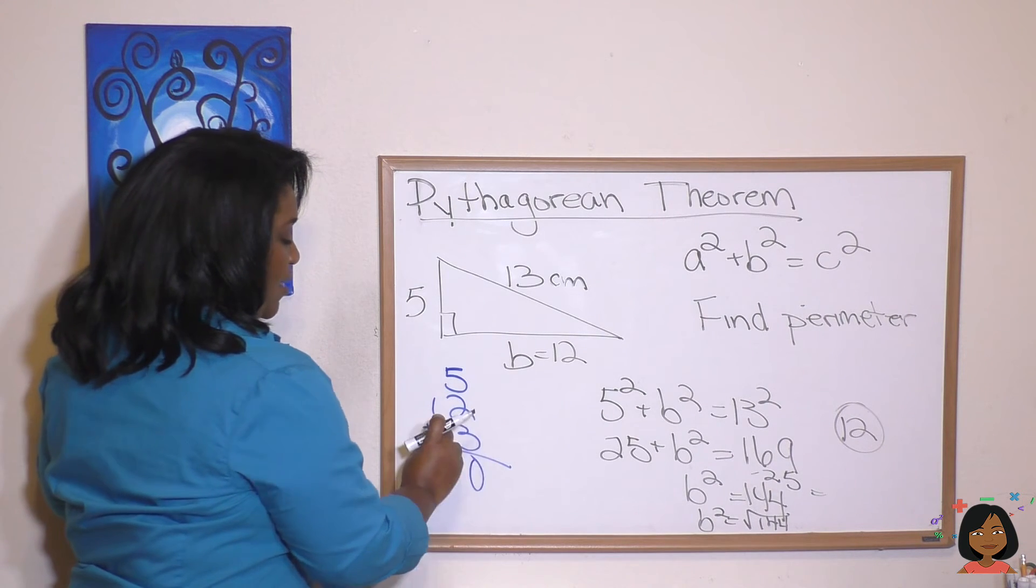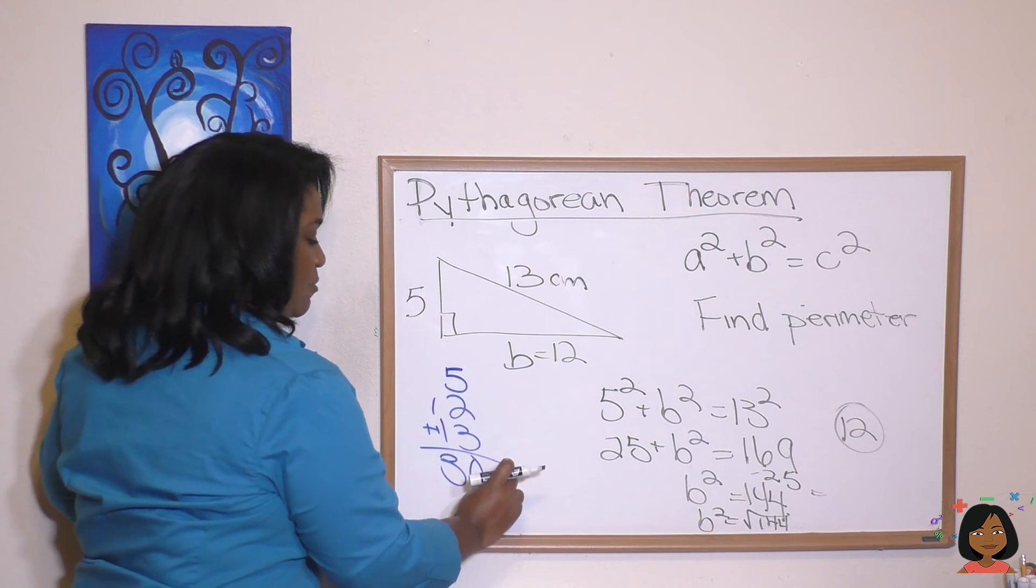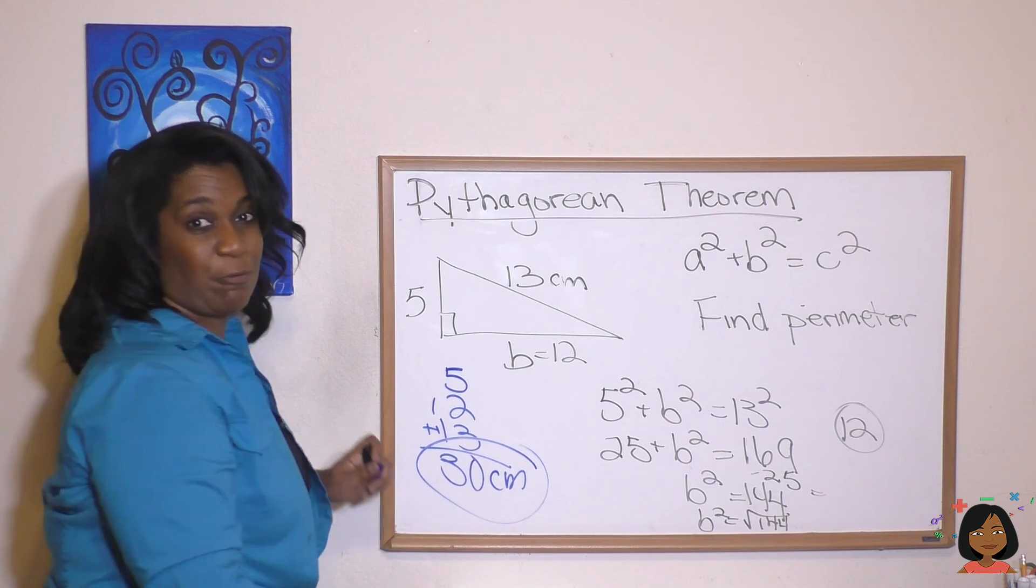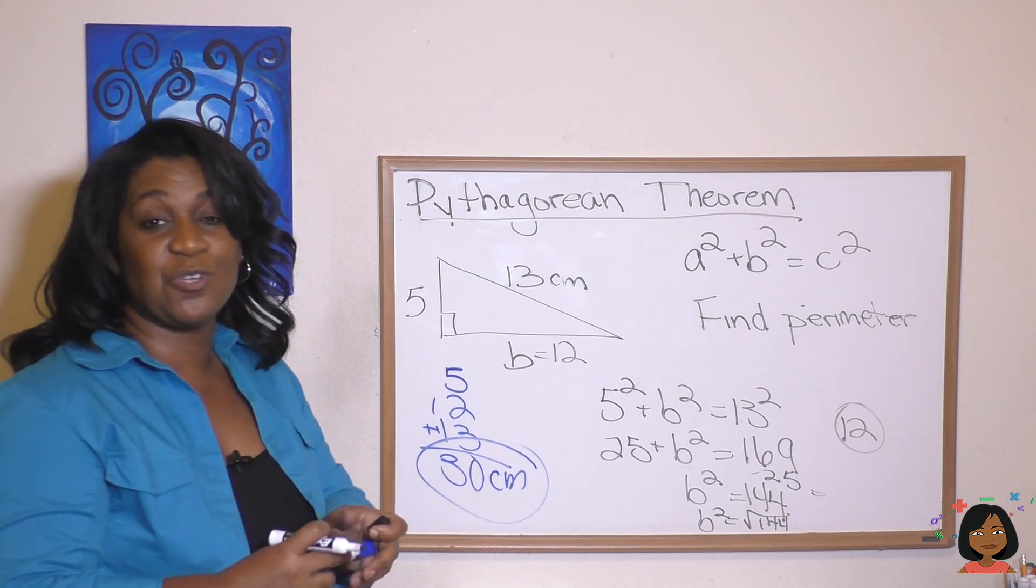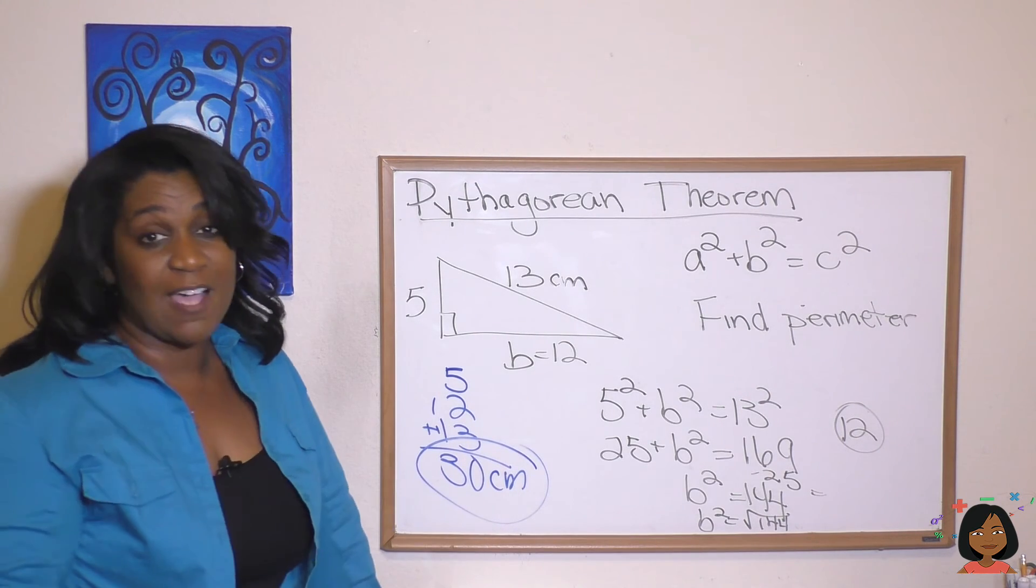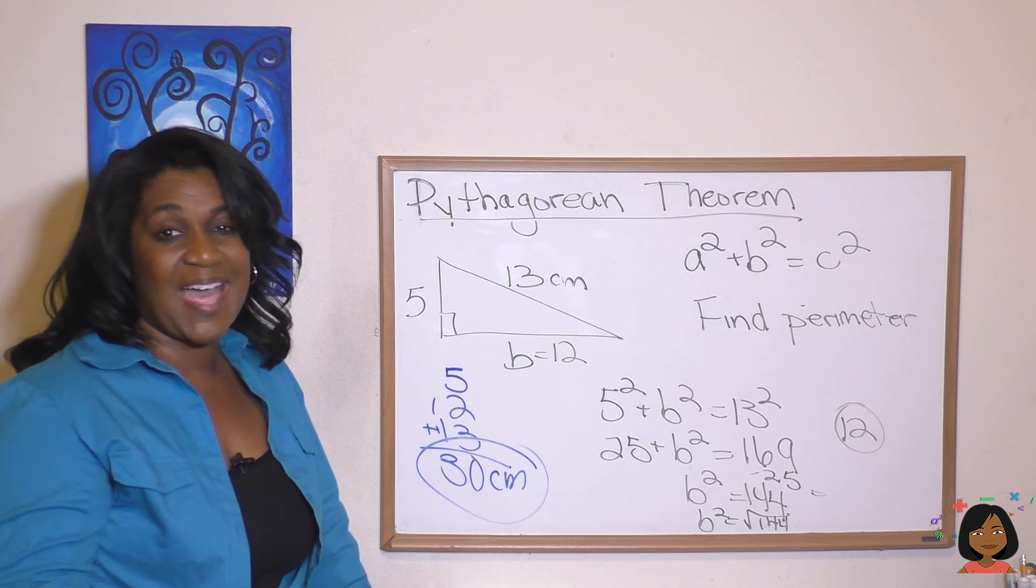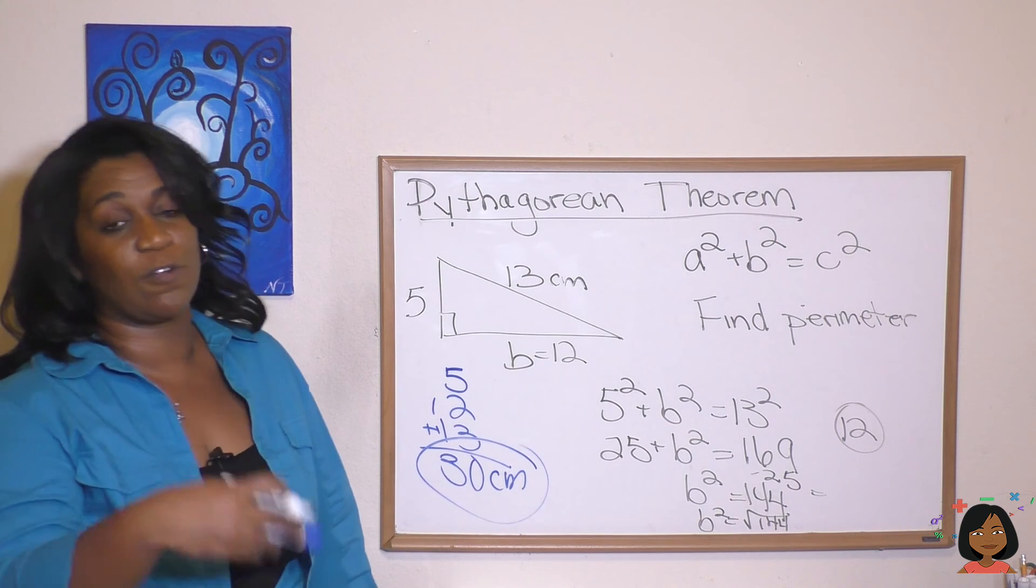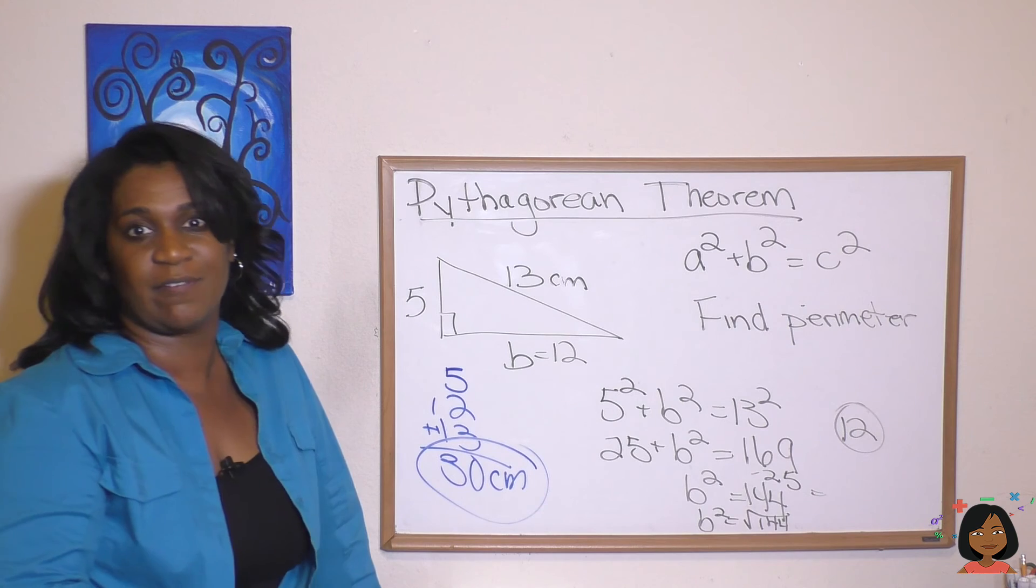Okay, so you can use the Pythagorean theorem to find that missing side and then use that to apply it to a word problem or find the perimeter or even find the area of something.